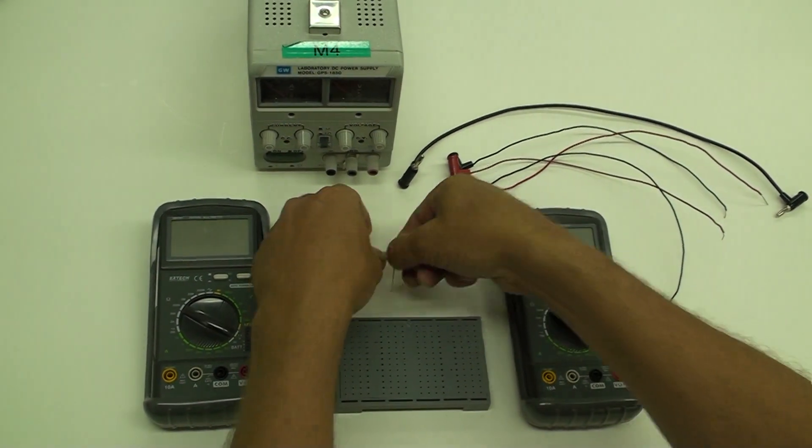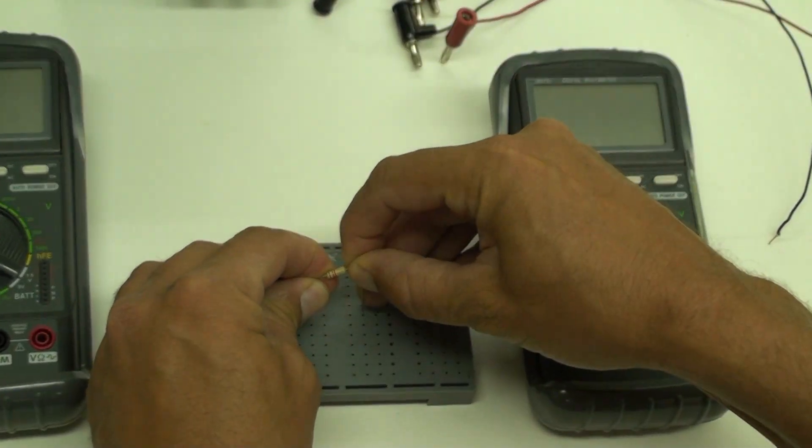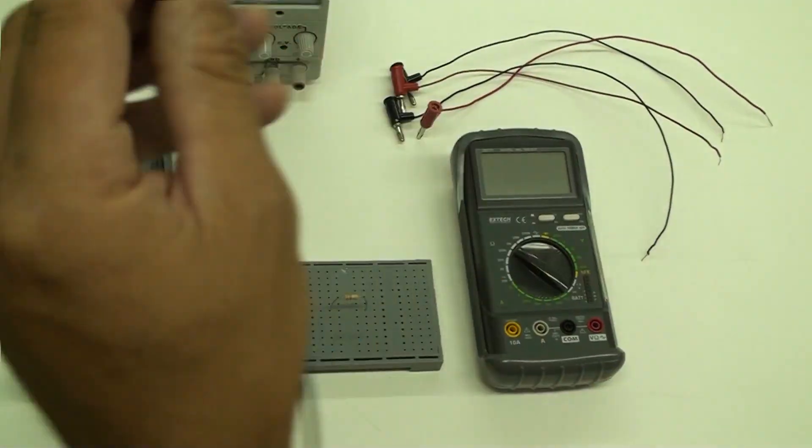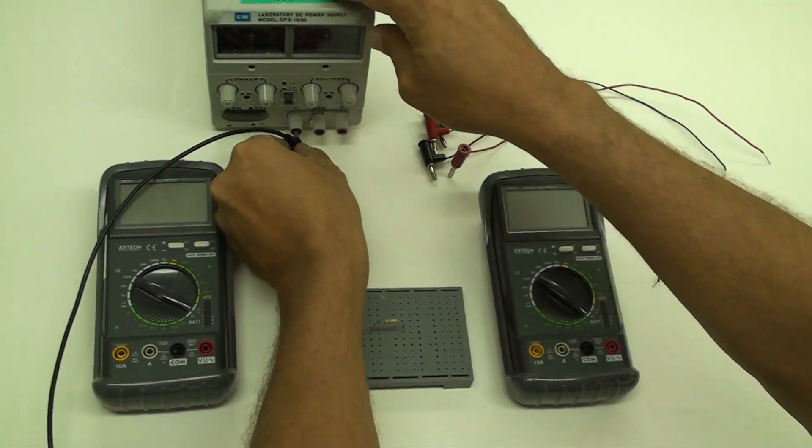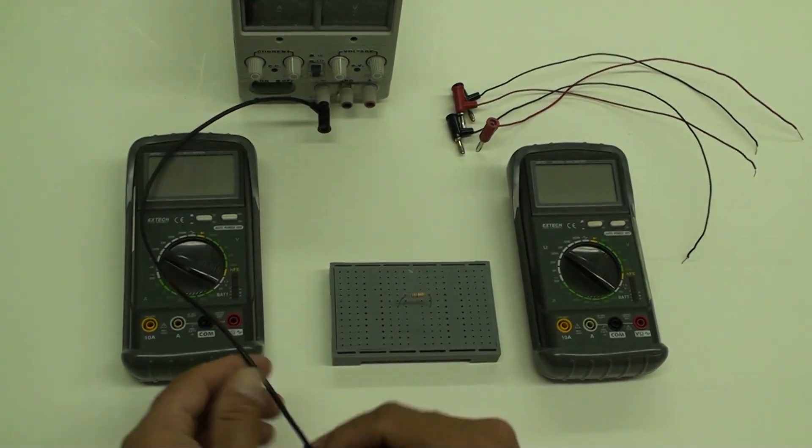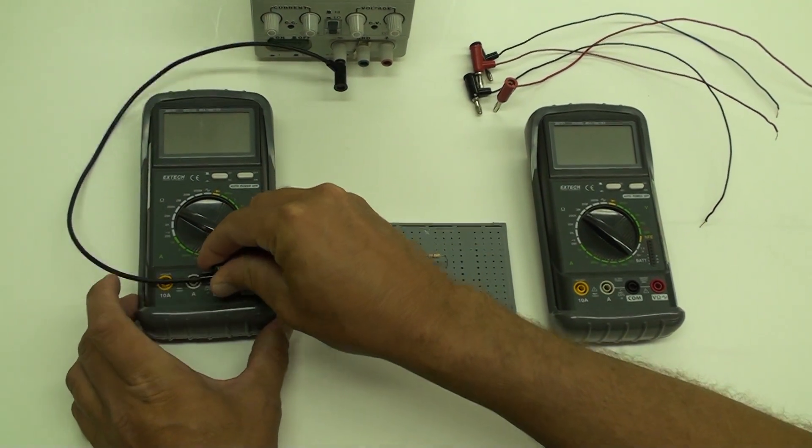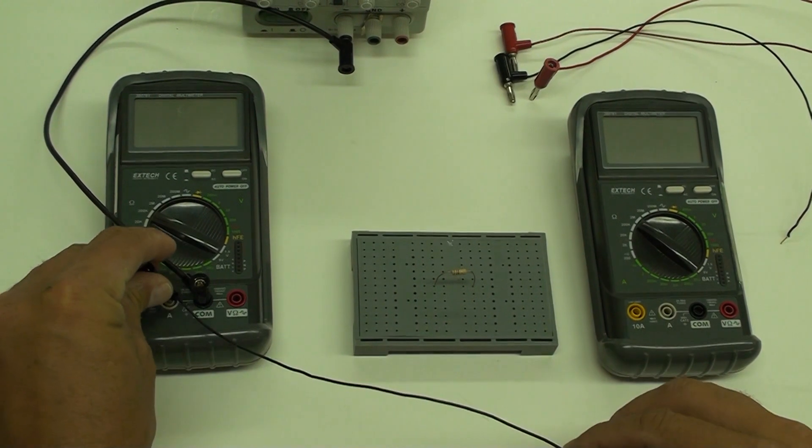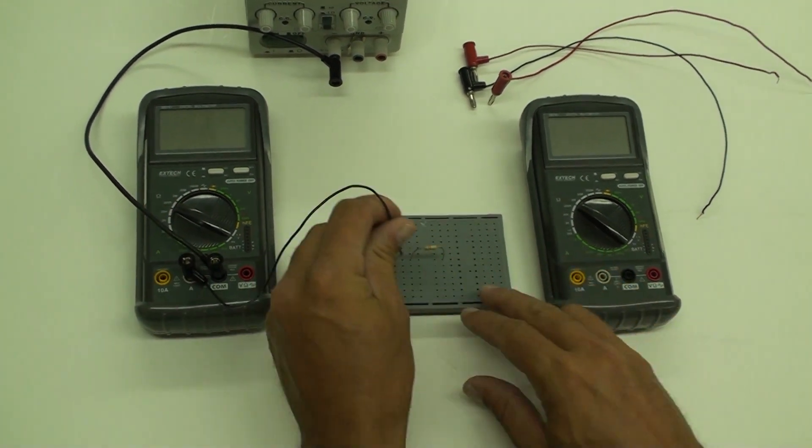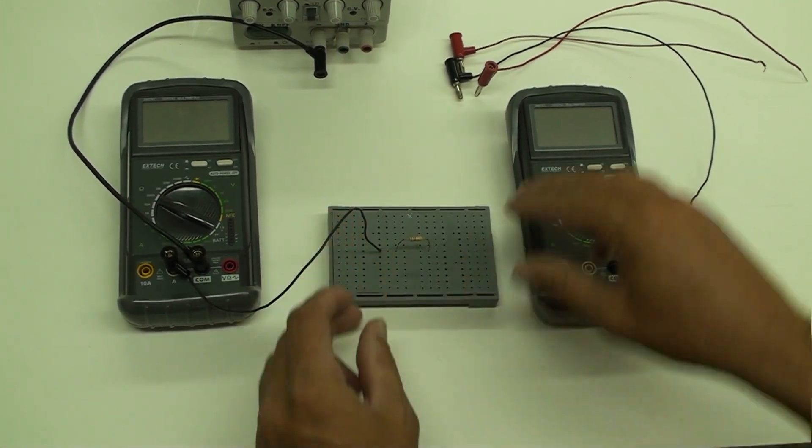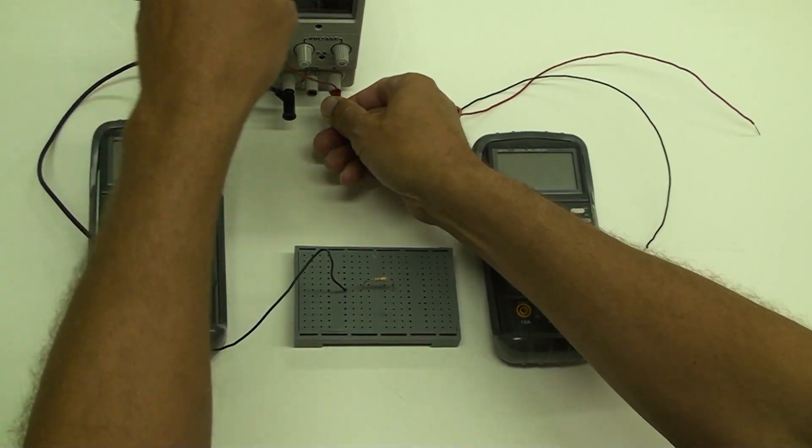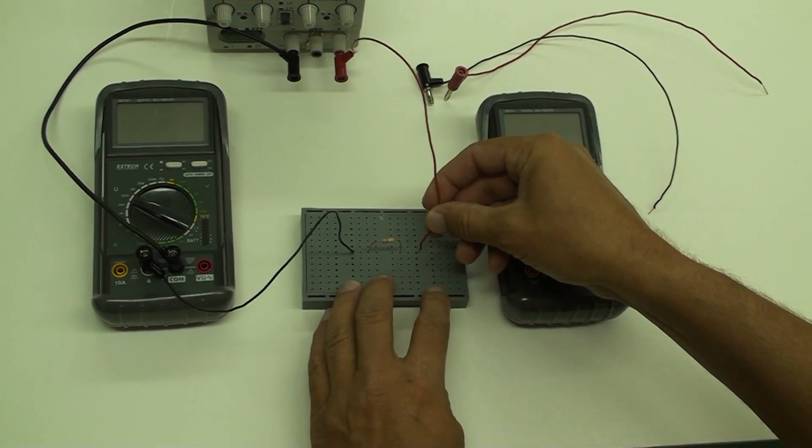Now we set up for the Ohm's Law experiment. Place the resistor, about 1,000 ohms, in the circuit board bridging a gap. The multimeter on the left is used as an ammeter to measure current. Run a lead from the low voltage terminal of the power source to the common hole of the ammeter. Make the connection from the amp hole of the ammeter to one side of the resistor. In this way all the current running through the circuit must pass through the ammeter.